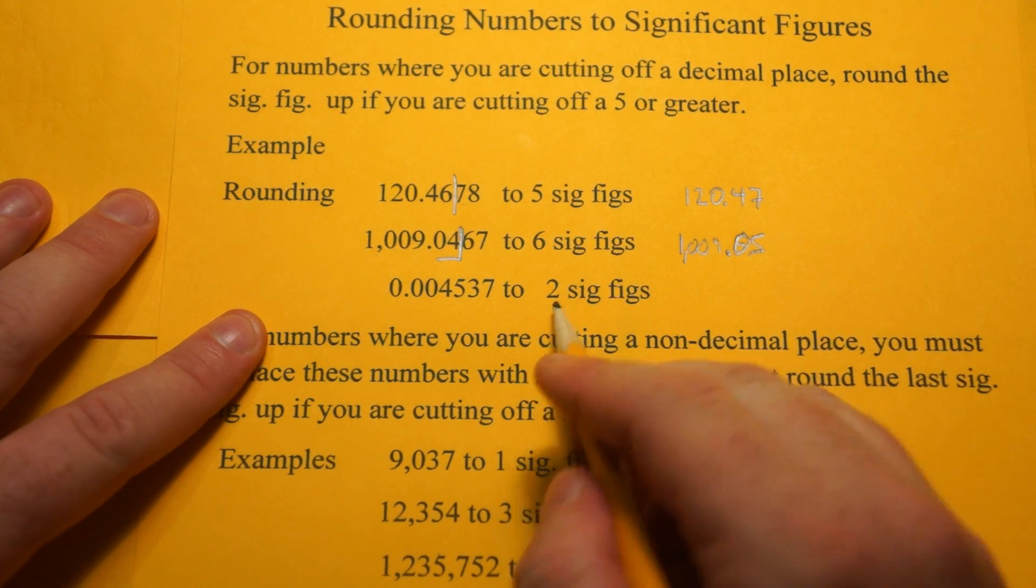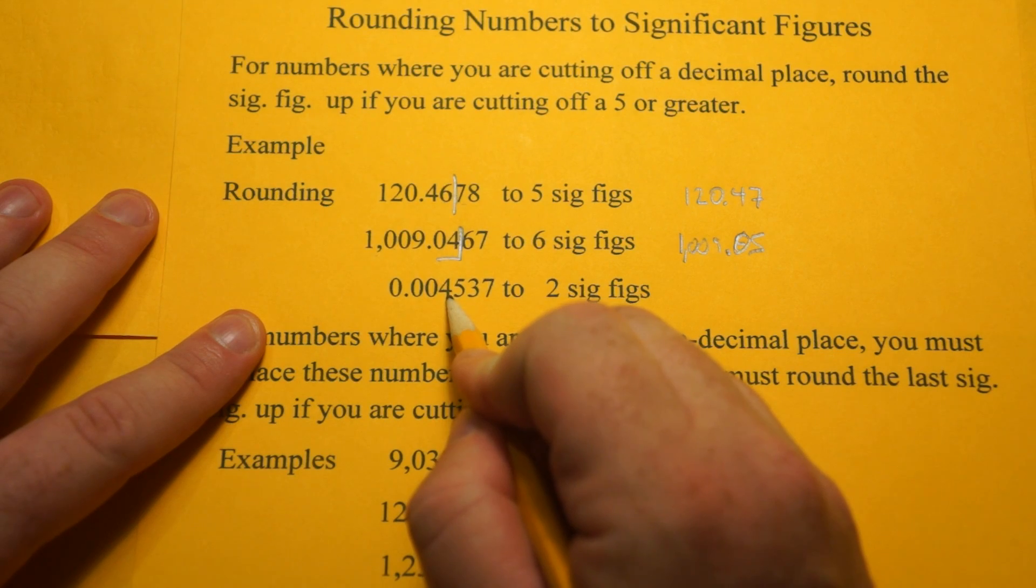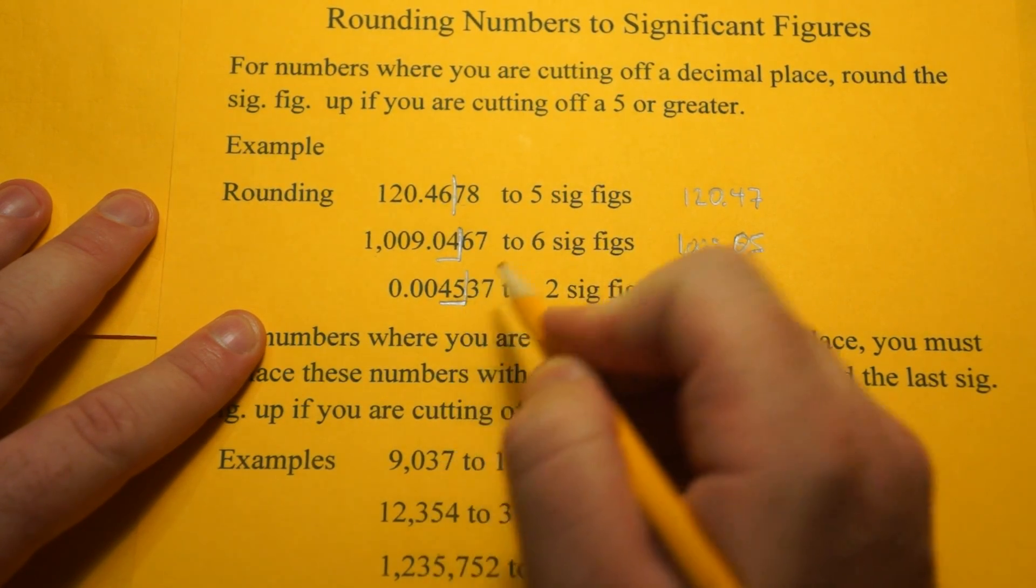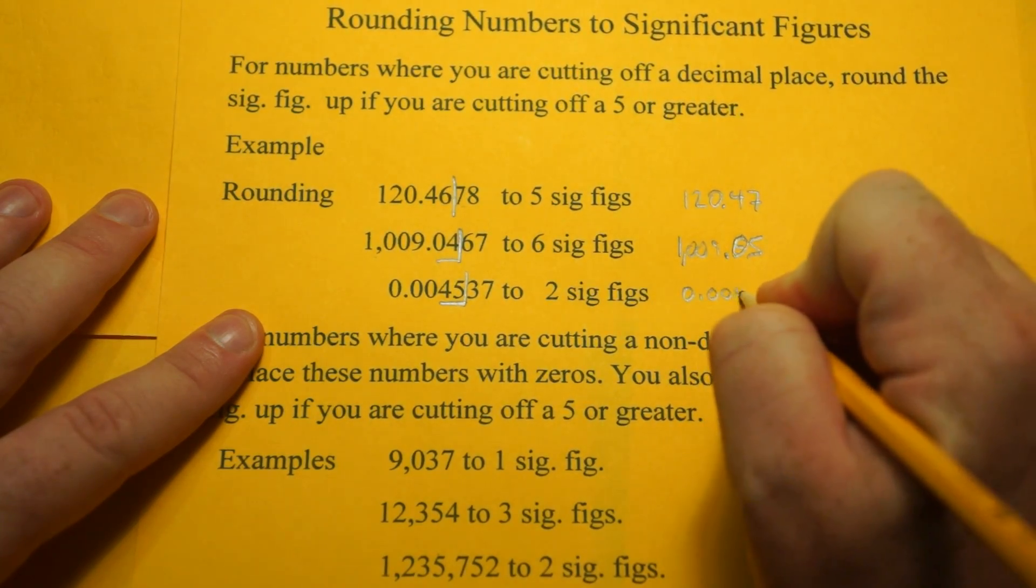And 2 sig figs. Okay, we got .00, these aren't sig figs. 4, 5, and we're going to cut off the 3, 7. And since it's a 3, you don't do anything.